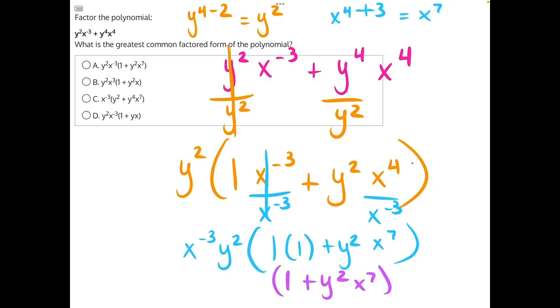And all of that is being multiplied to x to the negative three, y to the second, making answer choice a our correct answer.